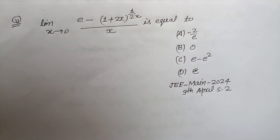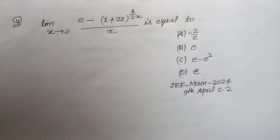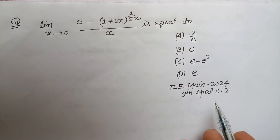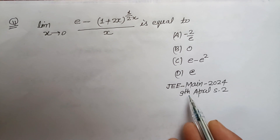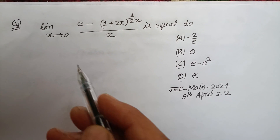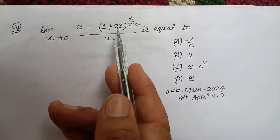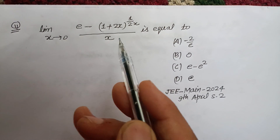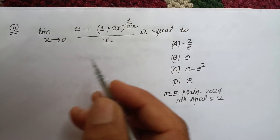Hello viewers, warm welcome to this YouTube channel. This question is from JEE Main 2024, 9th of April, 2nd shift. The limit is: as x tends to 0, (e^(1+2x)^(1/2x) - e) / x is equal to what?